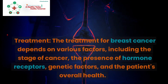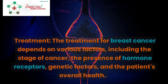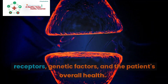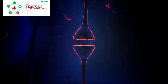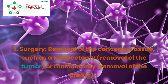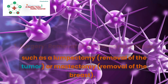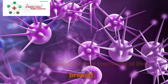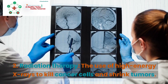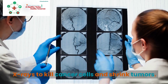Treatment: The treatment for breast cancer depends on various factors, including the stage of cancer, the presence of hormone receptors, genetic factors, and the patient's overall health. Common treatment options include: 1. Surgery: Removal of the cancerous tissue, such as a lumpectomy (removal of the tumor) or mastectomy (removal of the breast). 2. Radiation therapy: The use of high-energy X-rays to kill cancer cells and shrink tumors.